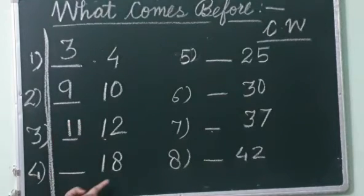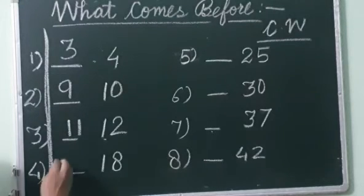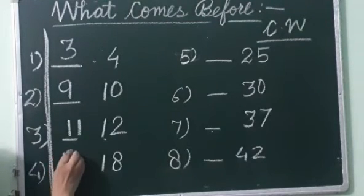Then what is the number? 18. So start counting from 11: 11, 12, 13, 14, 15, 16, 17, 18. So what did I say before 18? 17.